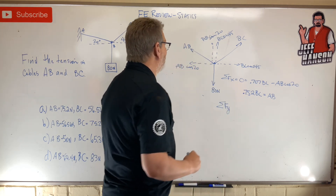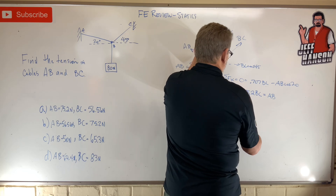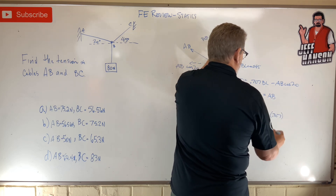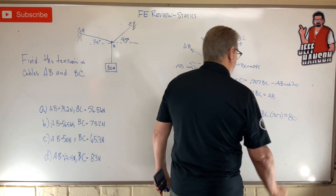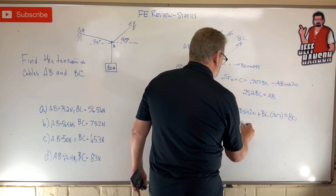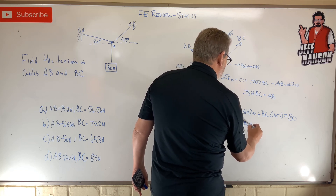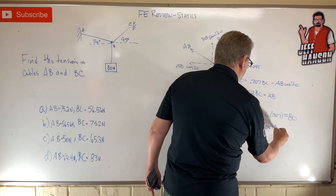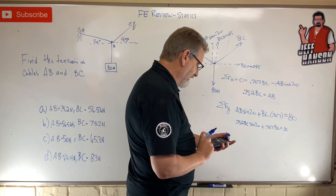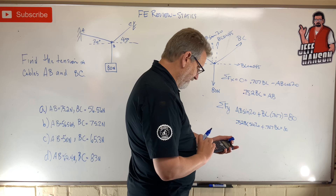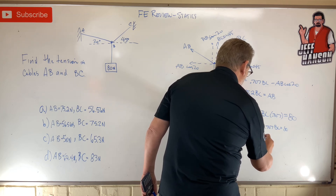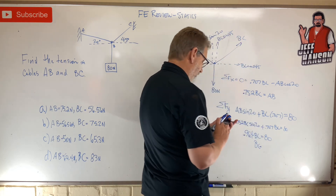One more equation — sum of forces in Y. Up stuff equals down stuff. Going up I've got AB sin20 plus BC times 0.707, equals the down stuff, equals 80. Do a little substitution: put 0.752 BC in for AB. So 0.752 BC times sin20 plus 0.707 BC equals 80. That gives us 0.257 plus 0.707, so 0.964 BC equals 80.